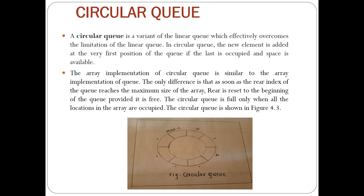In array implementation of the circular queue it is similar to the implementation of the queue. The only difference is that as soon as the rear index of the queue reaches the maximum size of the array, rear is reset to the beginning of the queue, but the condition is that the space should be free in the front. The circular queue is full only when all the locations in the array are occupied.